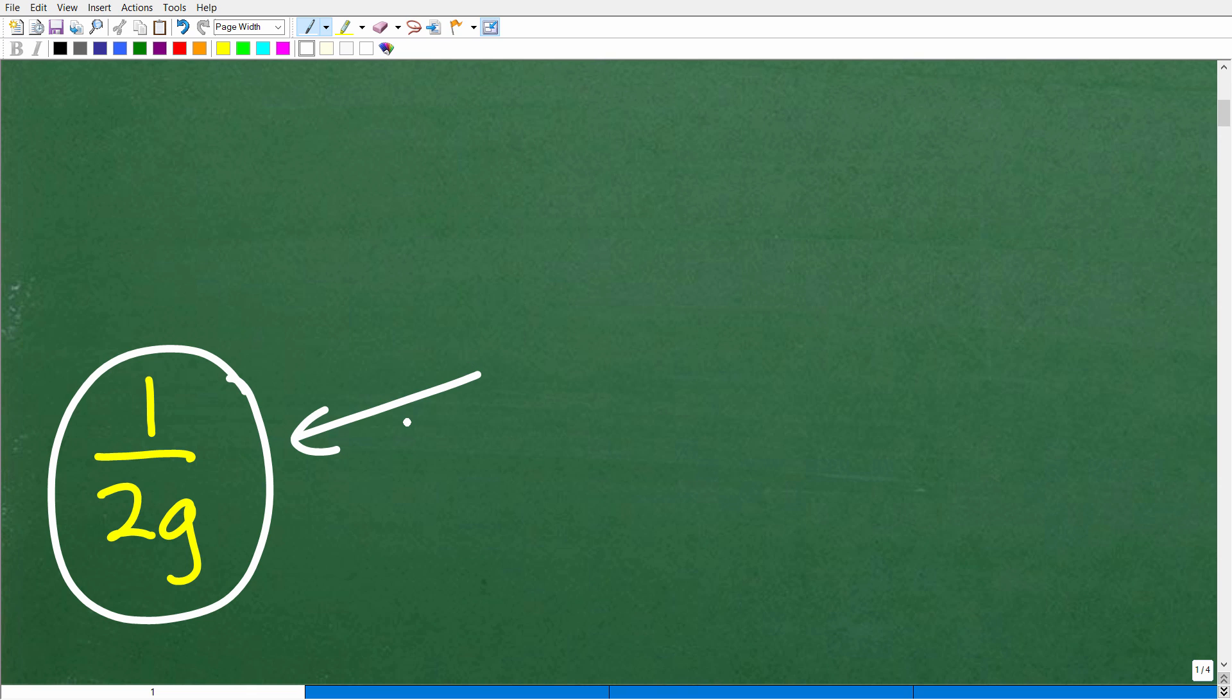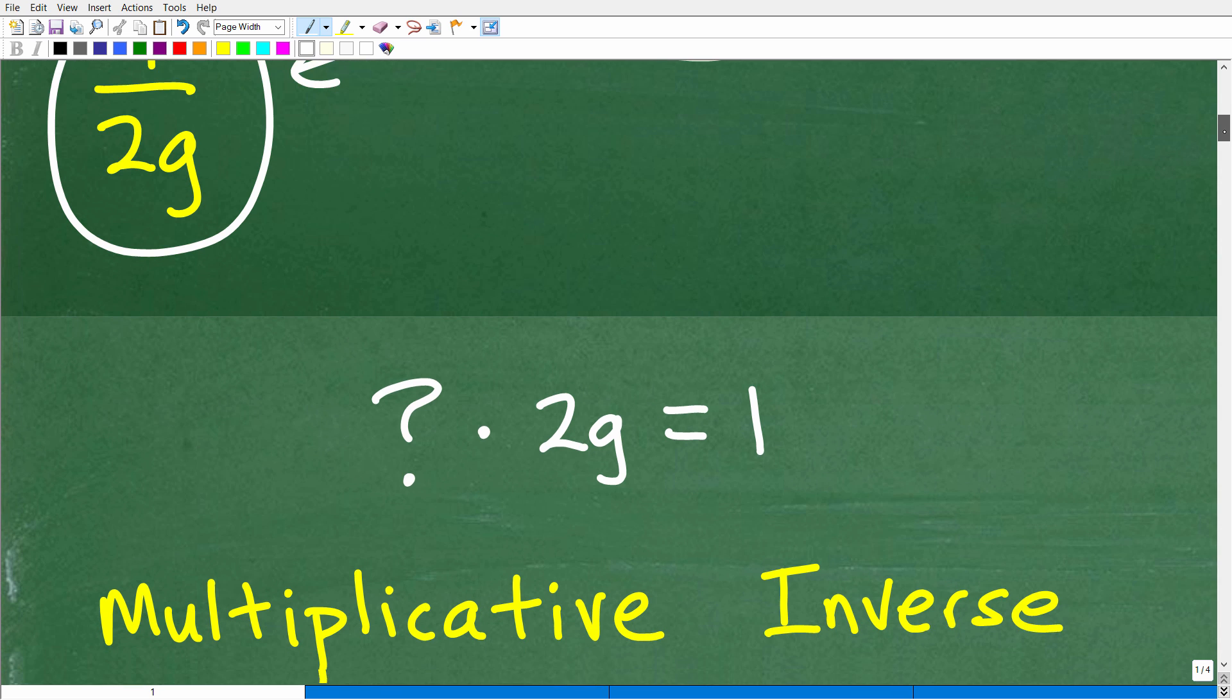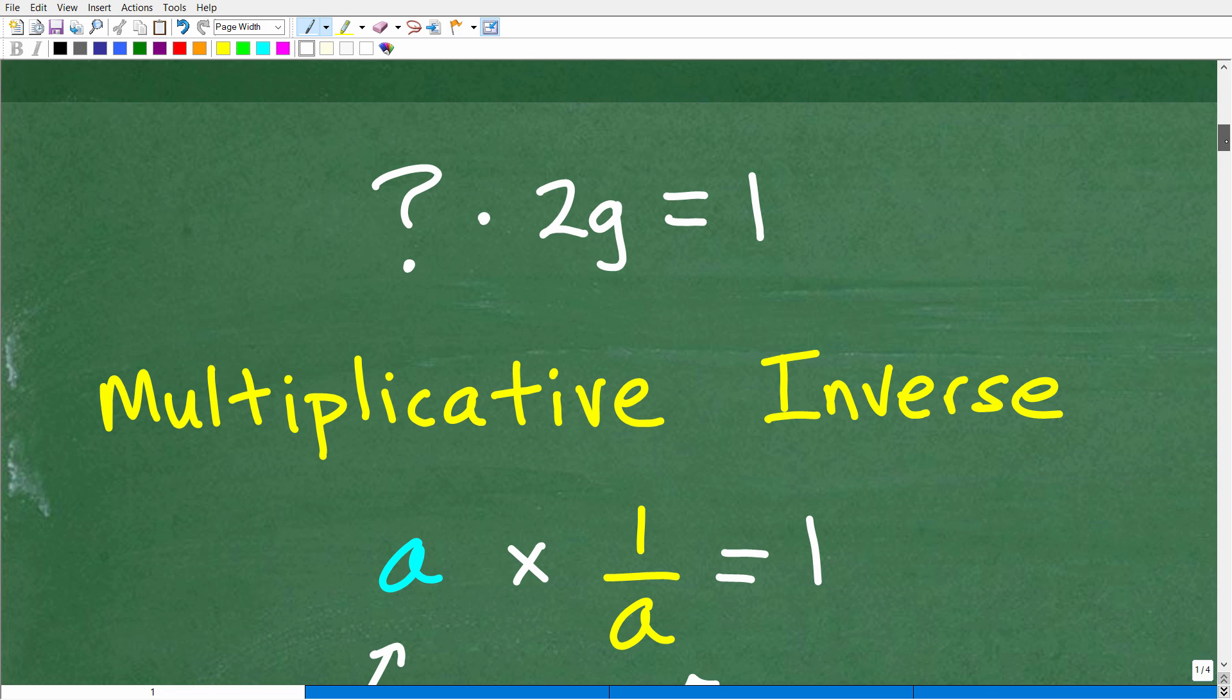Okay, so how did you do? Well, if you got this right, let's celebrate by giving you a nice little happy face and a plus a 100%, if I can write out 100%. Because, obviously, you know a thing or two about something called the multiplicative inverse.